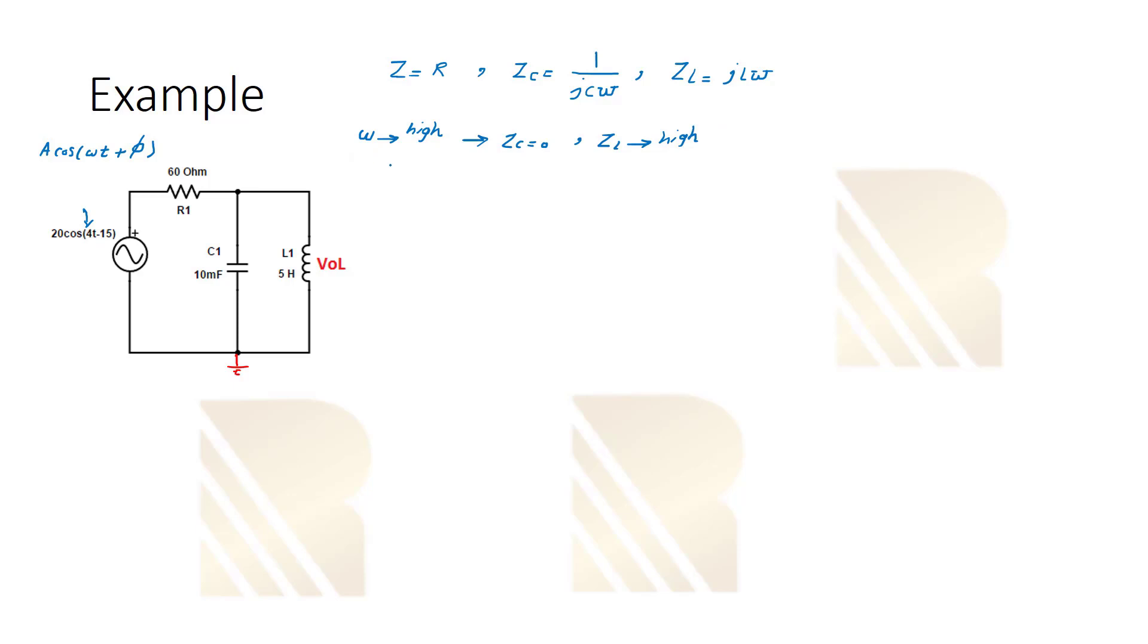And what about decreasing frequency? If we decrease the frequency, if the omega is very low, we can also call this DC frequency because it's very low value. In this case, ZC is exactly opposite of that. The ZC will be high, it means it's actually open. And what about the impedance of inductor in the low frequency? ZL will be equal to more or less zero, a low value. So we can say it's short.